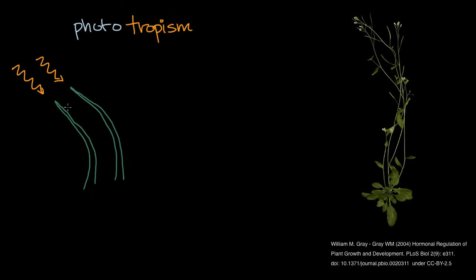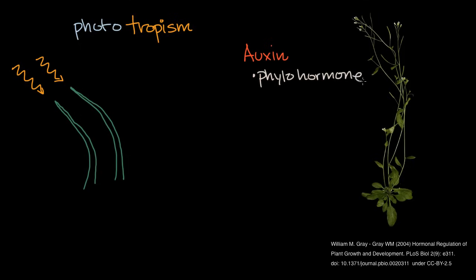What you typically see is positive phototropism. The question is, how does the plant do this? What causes it to turn in the direction of the light? The key actor here is a molecule called auxin — a phytohormone, which is just a molecule involved in the actual plant growth.